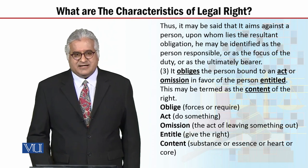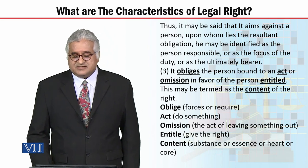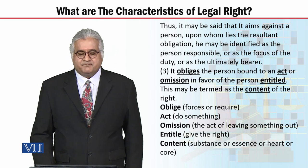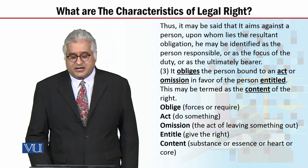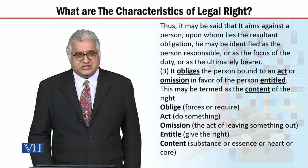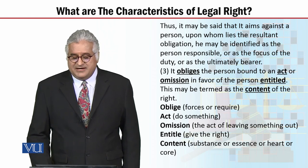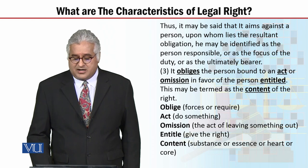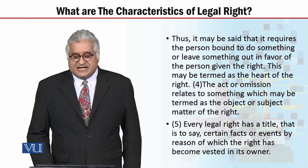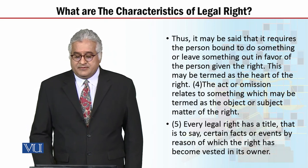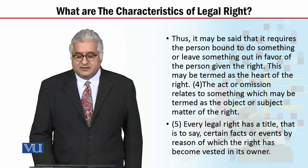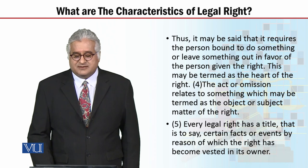The third characteristic of legal right: it obliges the person bound to enact or omission in favor of the person entitled. This may be determined as the content of the right. 'Oblige' ka matlab hai force or require. 'Act' ka matlab hai to do something. 'Omission' ka matlab hai the act of leaving something out. 'Entitle' ka matlab hai give the right. 'Content' ka matlab hai substance or essence or core of something. Thus, legal right requires the person bound to do something or leave something out in favor of the person given the right, and this may be termed as the heart of the right.